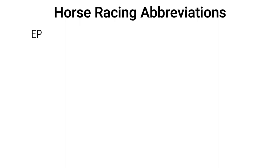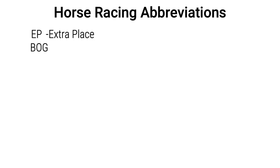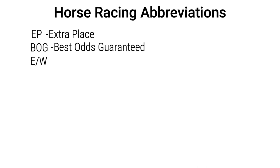Getting into the horse racing abbreviations, you have EP which stands for extra place. Then you have BOG — that's Best Odds Guaranteed — where you place a bet at back odds of, say, 10 on a horse and the odds go higher and that horse wins. The bookmaker will guarantee you the better odds and pay your winning bet out at those better odds. Then there's EW or E/W which stands for each way — that's when you place an each way bet on a horse race to cover both the win and place parts of the bet.